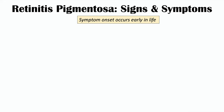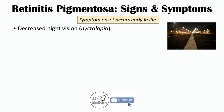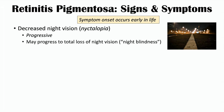Symptom onset occurs early on in life. We discussed onset in teenage years for autosomal recessive cases, but some minor findings can be noticed even earlier. One early symptom is a very subtle but decreased night vision, which can be progressive. As a patient gets older and rod cells continue to degenerate and undergo apoptosis, they can lose their night vision capabilities, ultimately leading to a total loss of night vision — referred to as night blindness. Rod cells are often the first cells to undergo apoptosis.